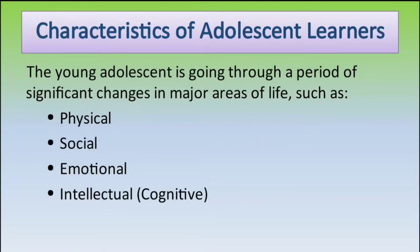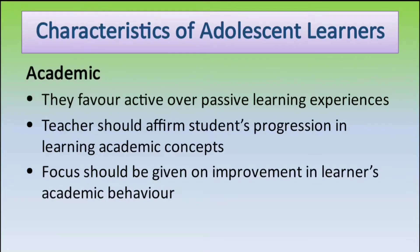The first topic is the characteristics of adolescent learners. The WHO definition places this age group from 10 to 19 years. That is why the first characteristics relate to their academic life.